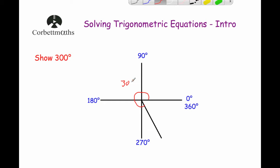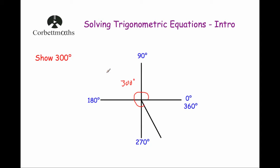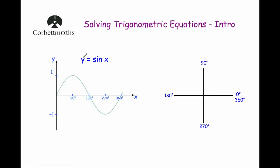Now let's have a look at why the CAST Diagram is called the CAST Diagram and how it's useful in solving trig equations. First, let's look at the y equals sine x graph. Starting at (0,0), going up to one at 90 degrees, zero at 180 degrees, negative one at 270 degrees, zero at 360, and so on. For angles between 0 and 90 degrees — our acute angles — whenever we work out the sine of those angles, we always get a positive answer.